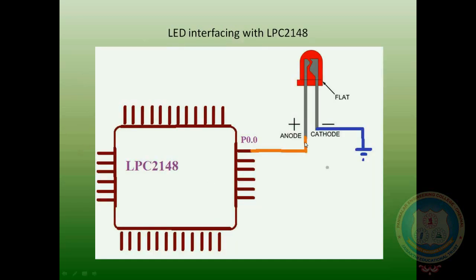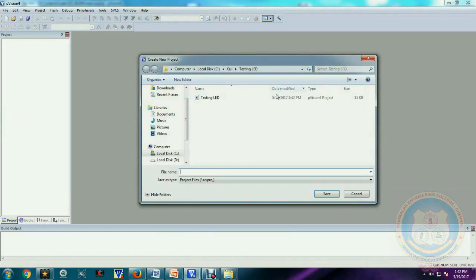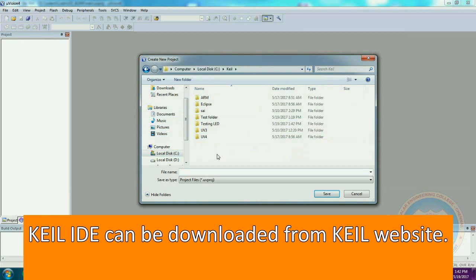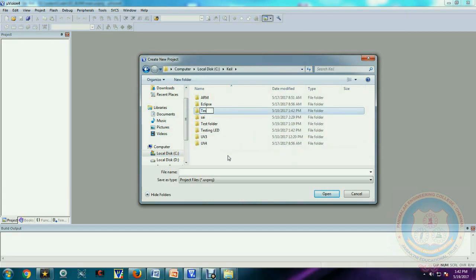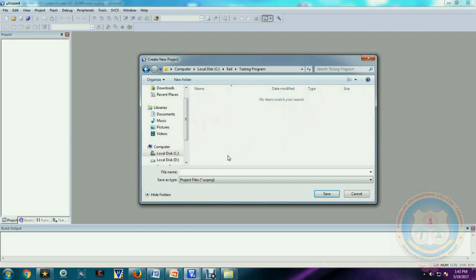Looking at the LED circuit diagram, the LED is connected such that when we provide logic high, that is plus voltage to the particular terminal, it is going to glow. Then we set logic zero, wait some time, and repeat the sequence for infinite times. This is easy to verify as a testing program for the processor.